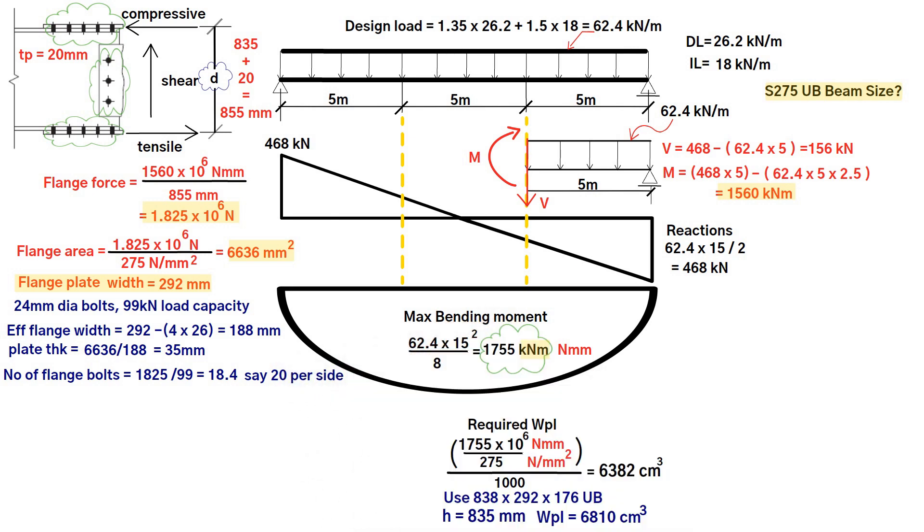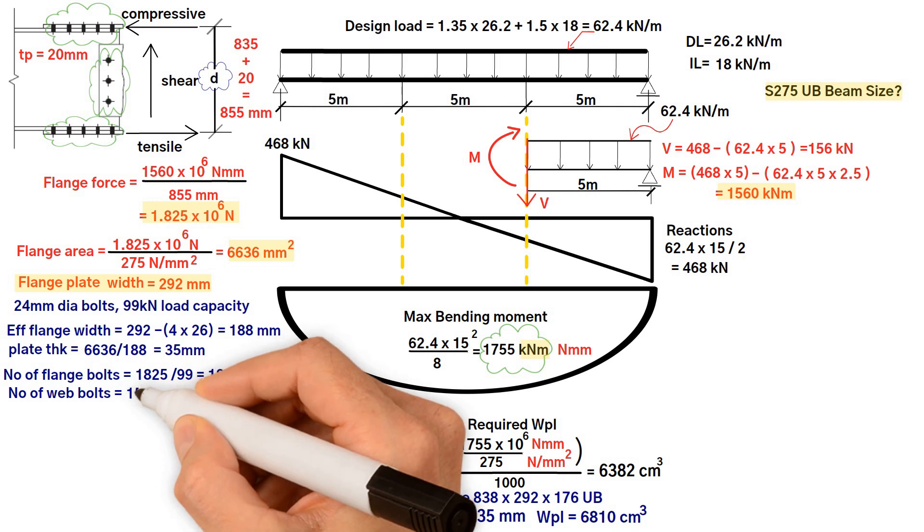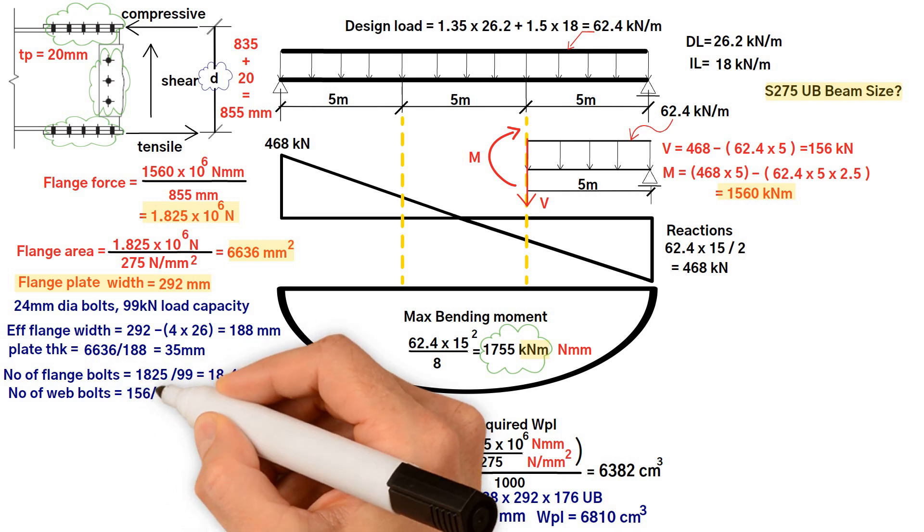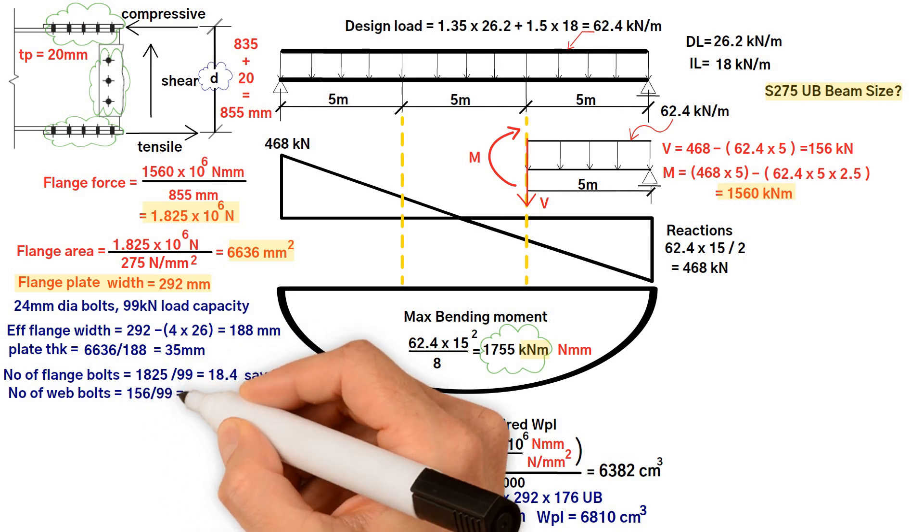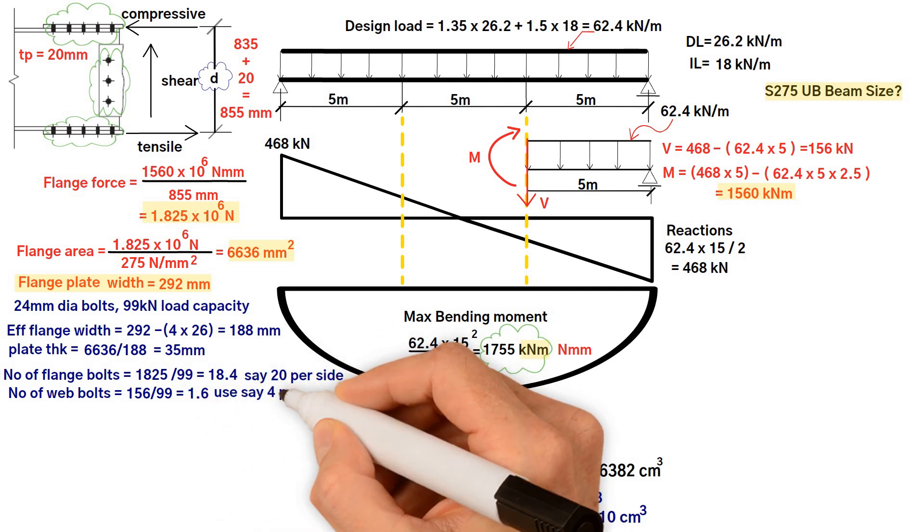For the web plate use 14 millimeters thick plate, for example the same as the beam web. Next, the number of web bolts equals the shear at the splice 156 kilonewton divided by the bolt load capacity 99 kilonewton equals 1.6, round this up to 4 per side.